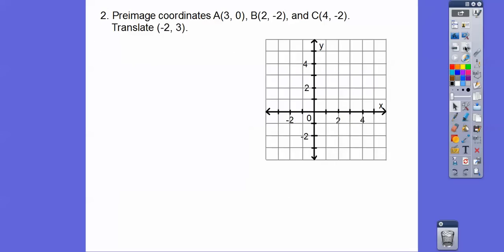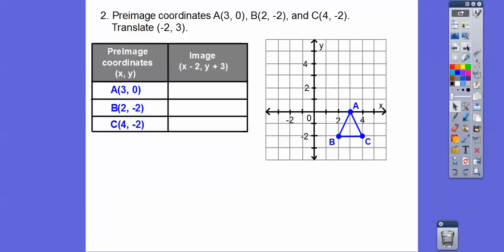Let's do that with this one here. The pre-image coordinates are (3, 0), (2, negative 2), and (4, negative 2), and we're going to translate using the vector (negative 2, 3). So we're going to subtract 2 from all the X coordinates and add 3 to all the Y coordinates. Let's graph triangle ABC, then subtract 2 and add 3 to each vertex and graph the image. Remember, the pre-image is before it gets moved — pre-movement — and here's the image after the movement.